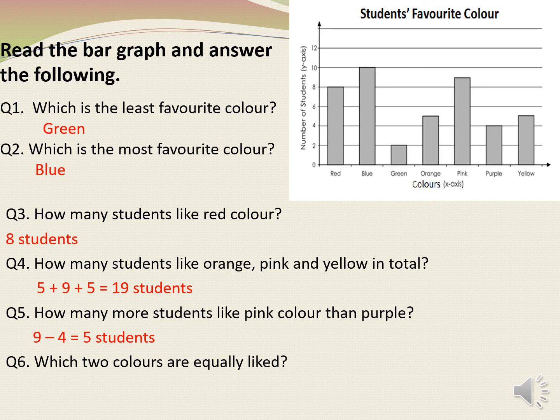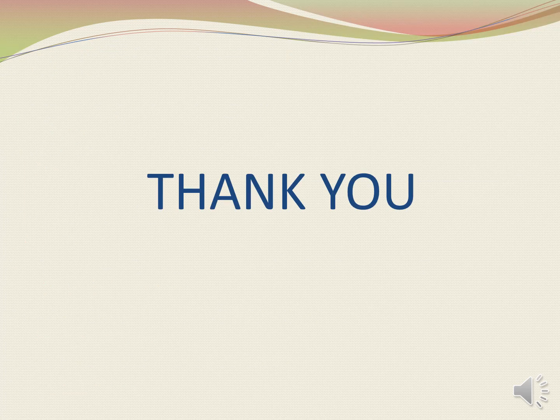Next: which two colours are equally liked? To find out the answer, we need to see which two bars are of equal length. We can see from our bar graph that orange and yellow have bars of the same length. So our answer will be orange and yellow. I hope you all have understood well. Keep practicing. Thank you.